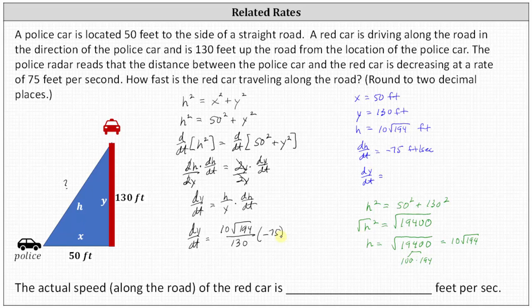Going to the calculator and rounding to two decimal places, we have dy/dt is approximately negative 80.36 feet per second. And to complete the statement below, the actual speed along the road of the red car is, we're not going to include the negative. This just indicates that the leg of the hypotenuse is decreasing, which makes sense because the car is driving in this direction. We're just going to say the speed is approximately 80.36 feet per second.